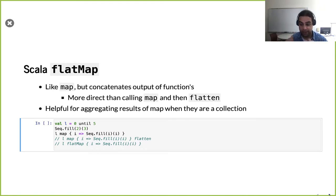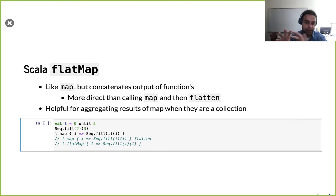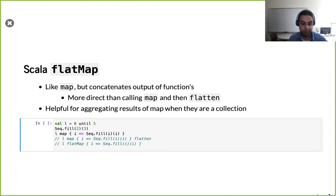There could also be cases where an element coming in produces not just one element but maybe a collection of elements. When you think about how you want your resulting collection to look, rather than it being a list of lists — where each element is turned into some sort of collection — perhaps you wish those collections were concatenated rather than just in parallel. There's an operation called flatten where you can turn a list of lists into a single list. So flatMap kind of does that already for us. If you were in a situation where you were calling dot-map and later dot-flatten, you can call flatMap instead.